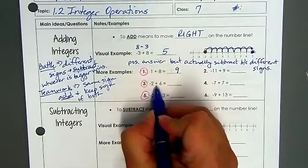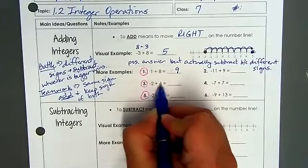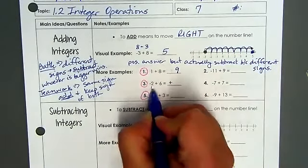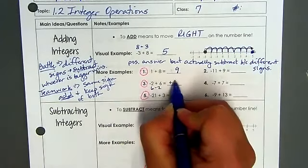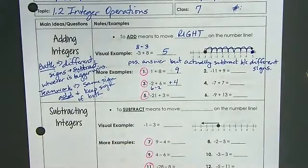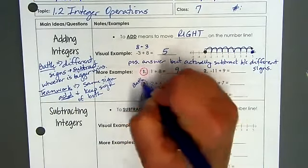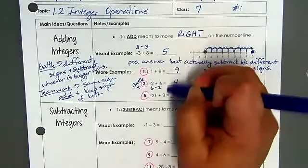For this next one, there are different signs because we have a negative and a positive. So therefore, they're doing battle. Who's winning here? The positives. So I'm going to be actually thinking about calculating it as 6 minus 2, which gives me a positive 4 as my answer, because this one is doing battle with the positives winning. And remember, you don't have to write this plus.